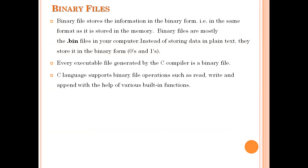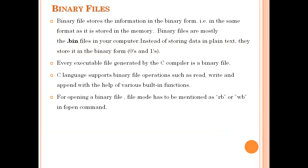C language supports binary file operations like read, write, and append mode. For this purpose, C provides a library file for performing operations with binary files. The stdlib.h file contains some methods to work with binary files. If you want to work with a binary file, you have to open the file in binary mode. The file mode should be either RB for read in binary mode, WB for write in binary mode, or AB for append in binary mode. If you use simply R or W, it will open the file as a text file.